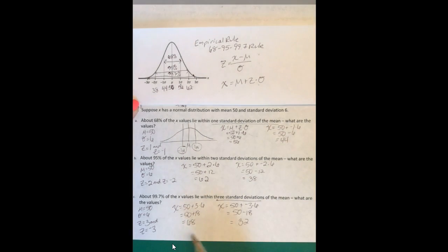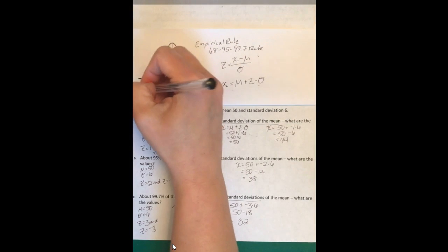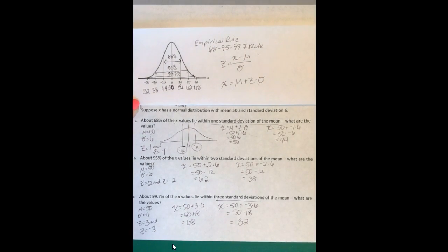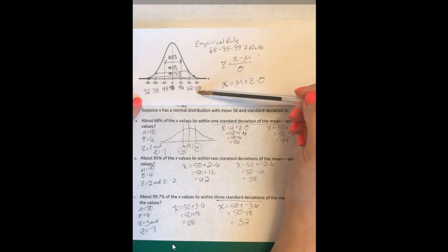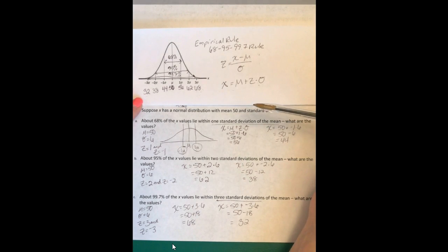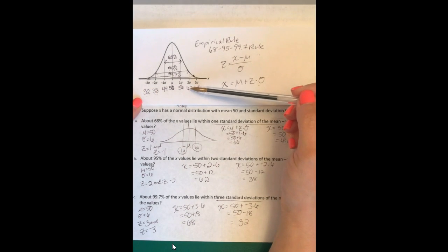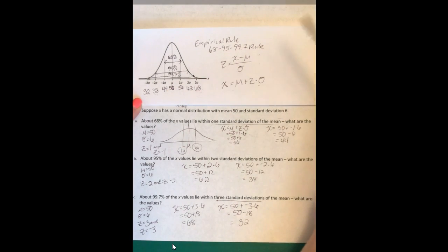That means 99.7% of the X values in this distribution are between 32 and 68. 95% are between 38 and 62, and 68% are between 44 and 56.